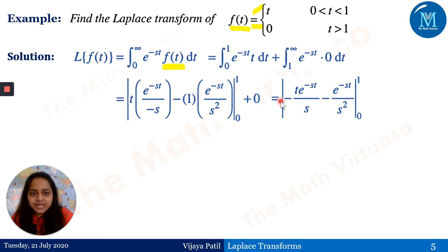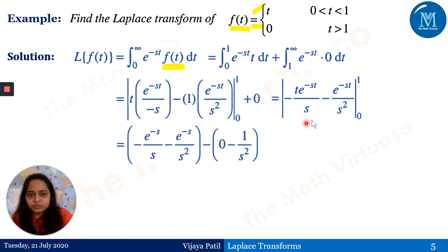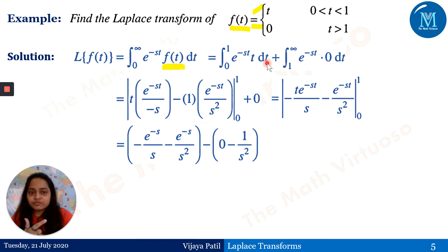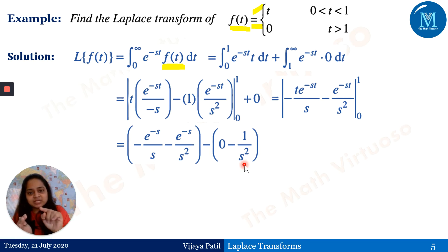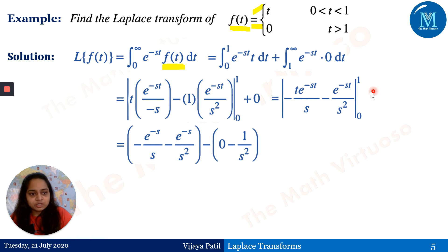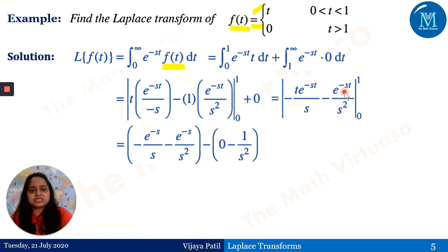This becomes [−t·e^(−st)/s − e^(−st)/s²] from 0 to 1. Substituting the upper limit (t = 1) minus the lower limit (t = 0): upper limit gives −e^(−s)/s − e^(−s)/s²; lower limit gives 0 − 1/s² (since e^0 = 1). So we get −e^(−s)/s − e^(−s)/s² + 1/s².